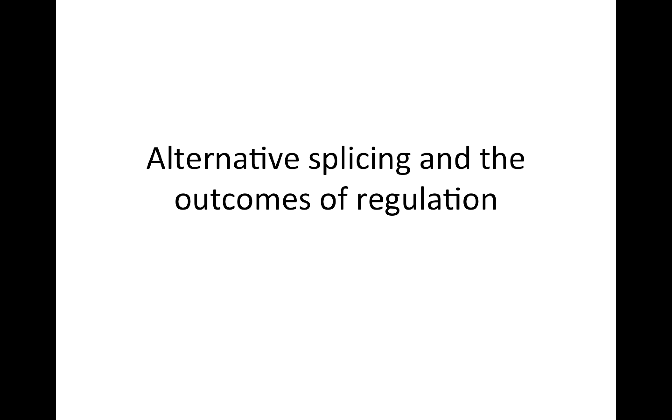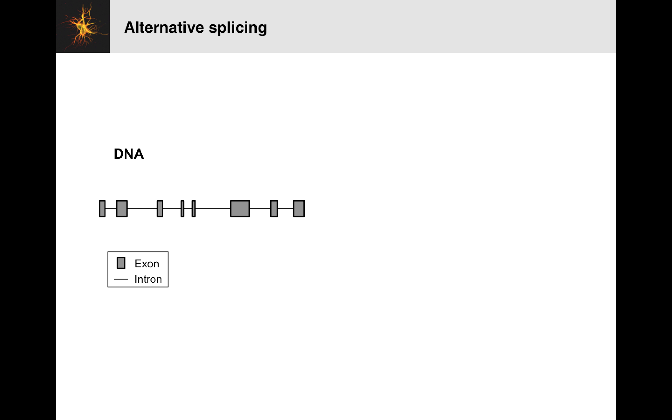In this video, I want to talk about alternative splicing and different outcomes that we can get from regulation. The main thing I want to focus on here is we've talked a lot about transcriptional regulation, and hopefully that's becoming natural. But I want to talk here about a very common form of post-transcriptional regulation. We're going to do this by discussing a single protein called NOVA.